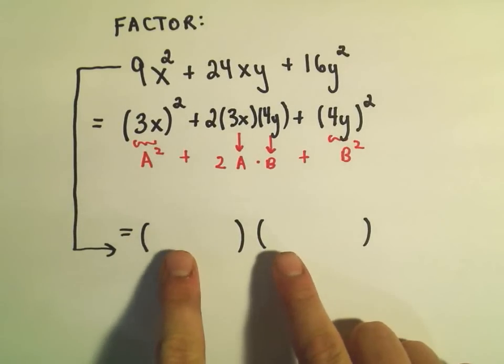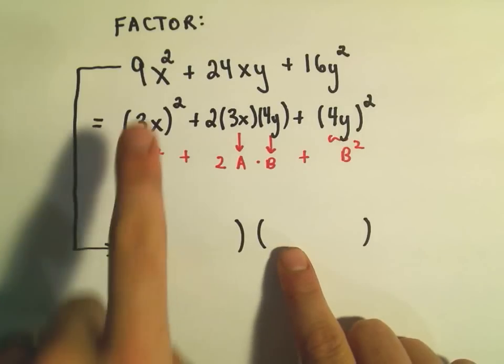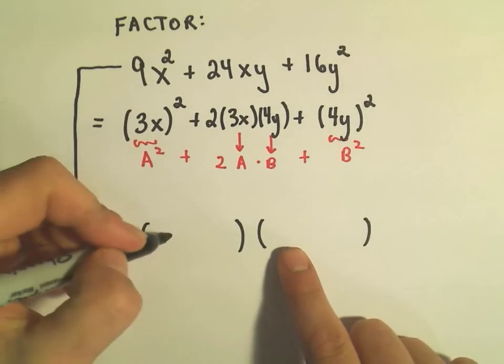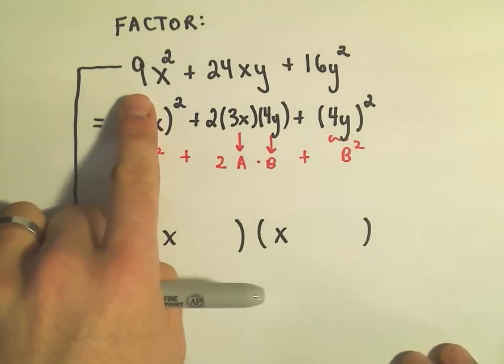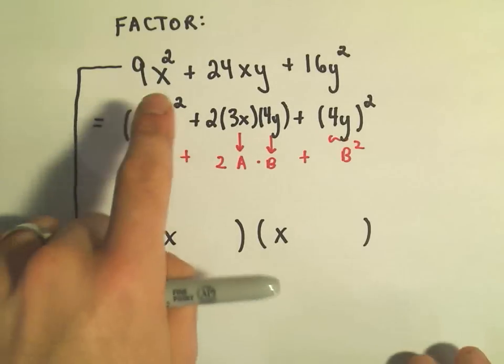In each of the parentheses, the first term, to get a 9x squared, well, to get an x squared, I'm going to need an x and an x. And then one thing I recognize is, hey, 9 is a perfect square.